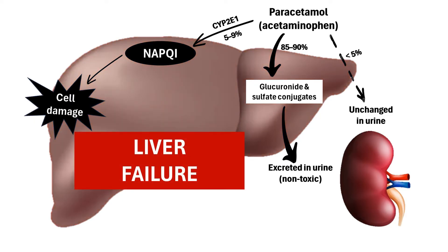Notably, paracetamol overdose is the leading cause of acute liver failure. Liver failure compromises important liver functions, including clearing of the body's wastes and toxins, as well as the synthesis of proteins for blood clotting. As such, people with liver failure are at risk of death.